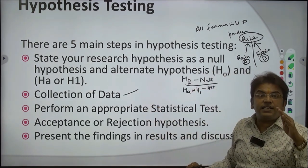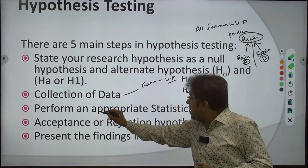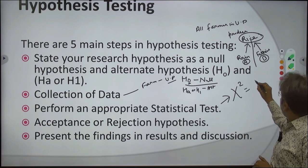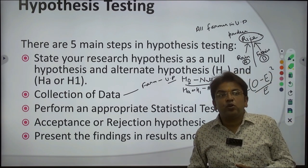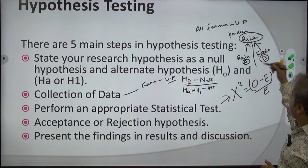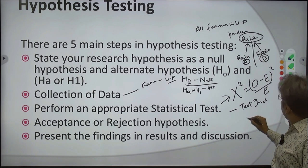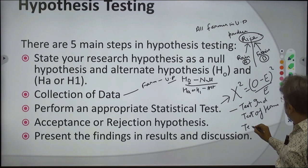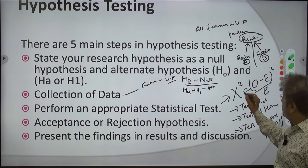After data collection, you perform an appropriate statistical test. For chi-square test, the formula is (O minus E) whole square divided by E — where O is the observed value and E is the expected value. You then apply test of independence, test of homogeneity, and test of goodness of fit. These three tests can be done using the chi-square test.